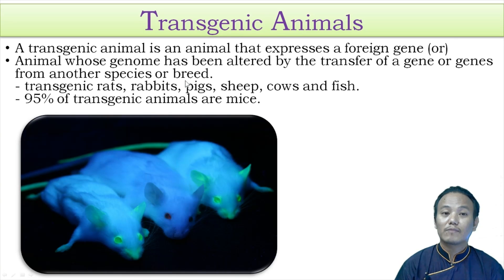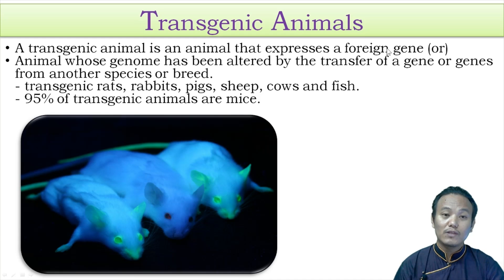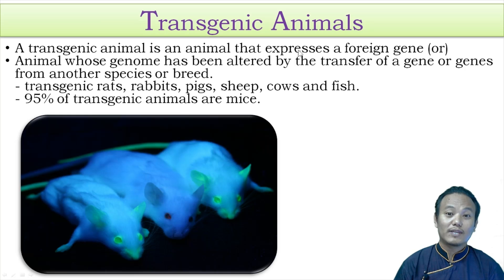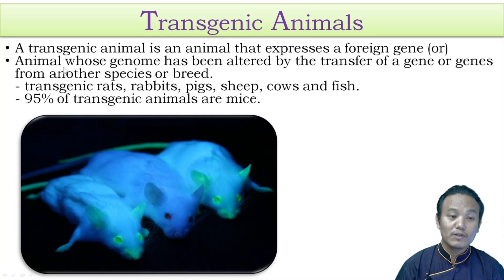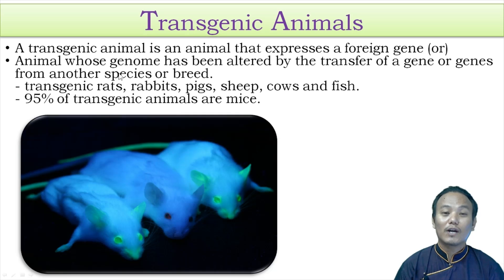So what is a transgenic animal? A transgenic animal is an animal that expresses a foreign gene. Scientists have inserted a gene within the animal, thereby making that animal a genetically modified organism, and inside that animal the foreign gene will express itself. Another definition: a transgenic animal is an animal whose genome has been altered by the transfer of a gene or multiple genes from another species or another breed.